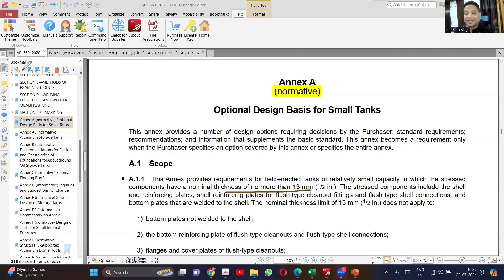When you are using Annexure A, you cannot have thickness more than 13 mm, and this annexure will be applicable only when it is decided by the purchaser. The purchaser is saying that follow this annexure, then only you will be following it.